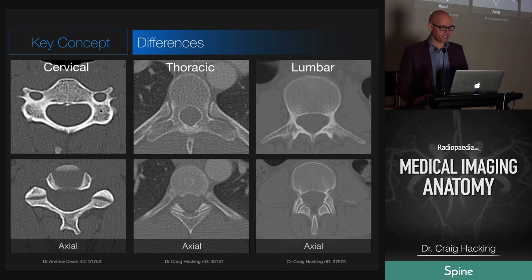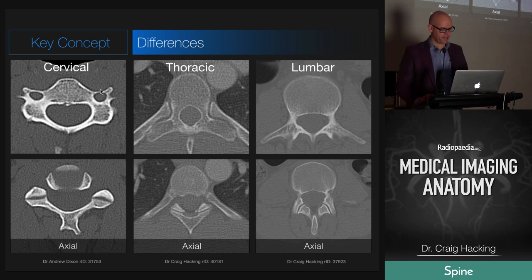Just illustrating some of those differences — there's the transverse foramen in the transverse process of the cervical vertebrae, usually from C6 up. C7 shouldn't have it but occasionally might. Here the little costal facets on the transverse processes allow the costotransverse joint, and then this would be the costovertebral joint of the ribs.